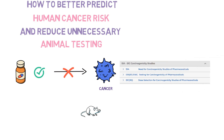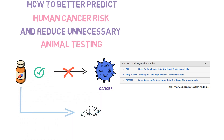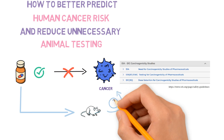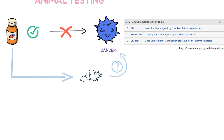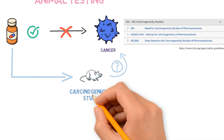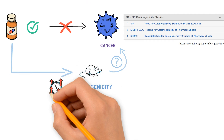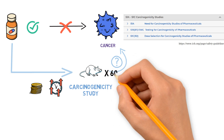The risk of a drug causing cancer has historically been evaluated using animals based on the ICH S1 international guidelines. This means the drug will be given to animals — usually rats and mice — for their lifetime to see if tumors develop. This is what we call a carcinogenicity study.